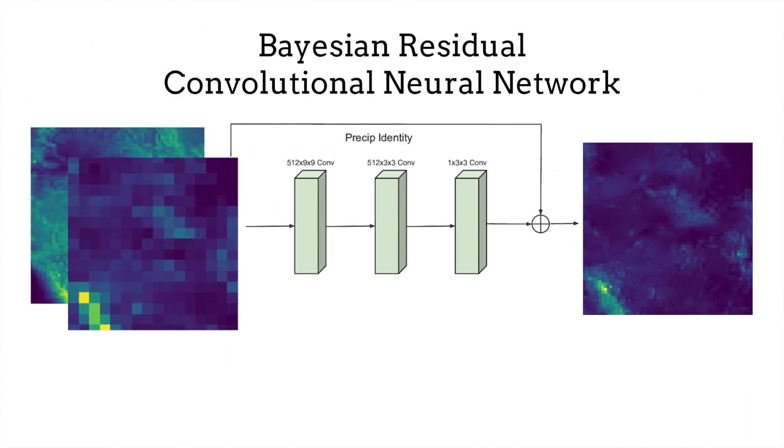Defining this problem as a super-resolution task, we use a convolutional neural network architecture to learn this mapping. However, we know that this super-resolution problem is ill-posed, which introduces more uncertainty into the model parameters.